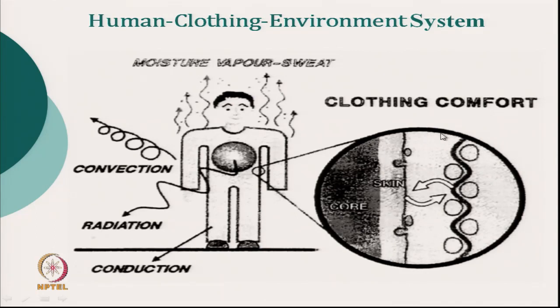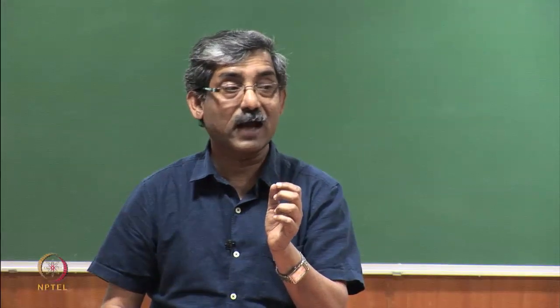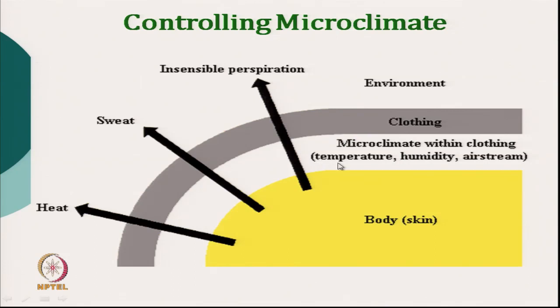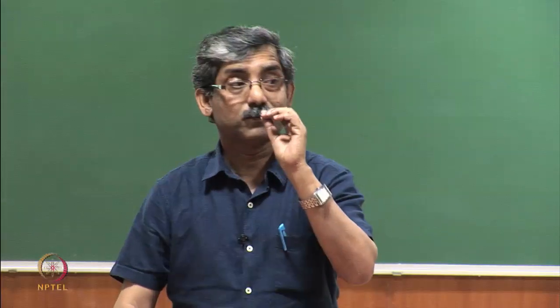The space between skin and clothing is known as the microclimate. It is not the environmental temperature which gives us the comfort feeling — it is the microclimate which is important. The microclimate temperature and humidity directly interact with our body. Our body, skin, and clothing work together to transmit heat, sweat, and insensible perspiration. The microclimate temperature and humidity control our comfort feeling, and controlling the microclimate is achieved through proper selection of clothing.